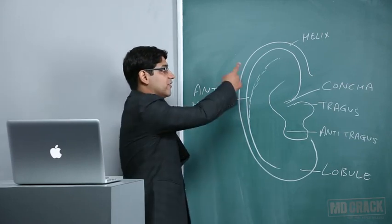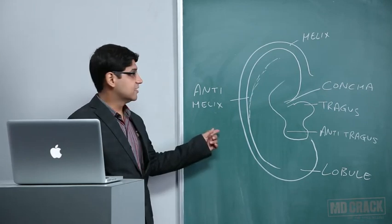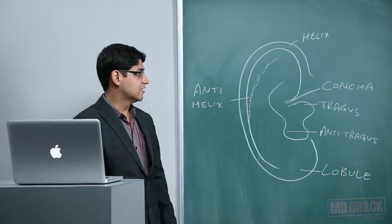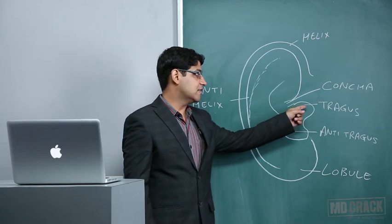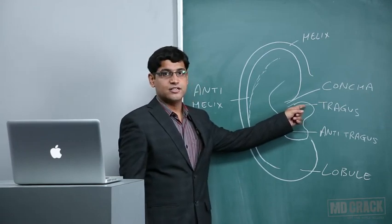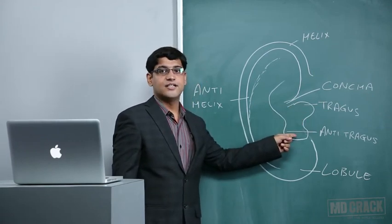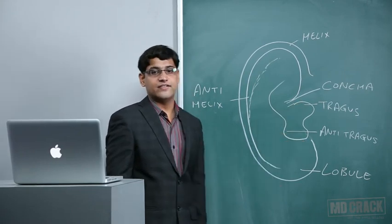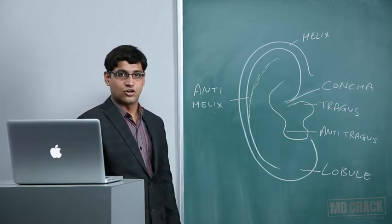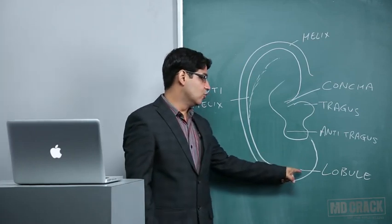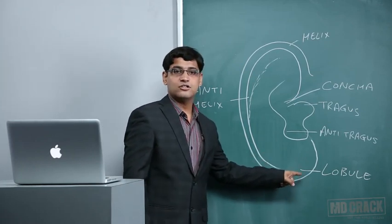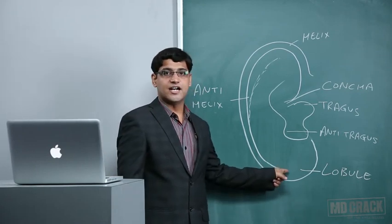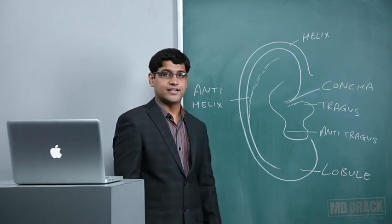The outermost rim of the pinna is the helix. Inside it is the anti-helix. We have a cartilaginous part medially known as the tragus. Just opposite to it is the anti-tragus. Between the tragus and anti-tragus we have the inter-tragic notch. The lobule of the pinna does not have any cartilage - it is made up of only fat.